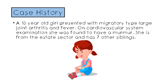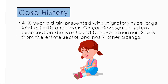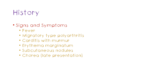Let's start with a case history. A 10-year-old girl presented with migratory type large joint arthritis and fever. On CVS examination she was found to have a murmur. She is from the estate sector and has seven other siblings. The first thing with any case is to take a thorough history. To recognize the condition we have to know the signs and symptoms of rheumatic fever.